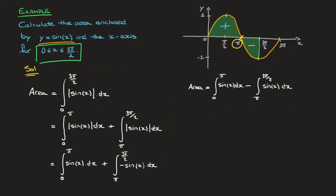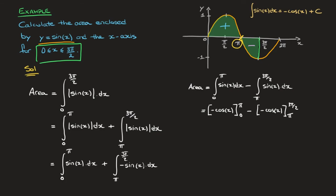All the groundwork is done — all that's left is to evaluate each of these two definite integrals. Using the fact that the integral of sine of x equals negative cosine of x plus a constant c, the area equals: negative cosine of x evaluated from 0 to pi, minus negative cosine of x evaluated from pi to 3 pi over 2. Taking the negative outside the second pair of brackets gives: negative cosine of x evaluated from 0 to pi, plus cosine of x evaluated from pi to 3 pi over 2.